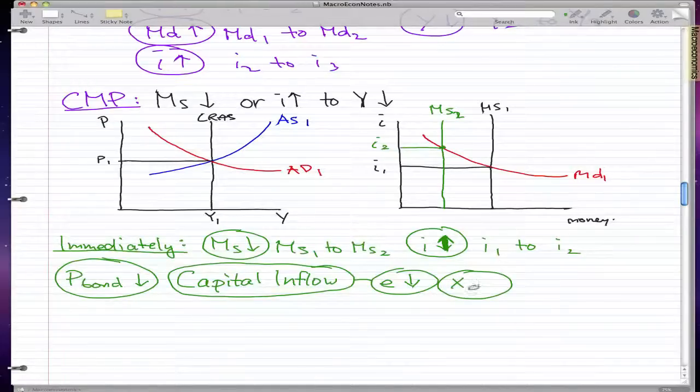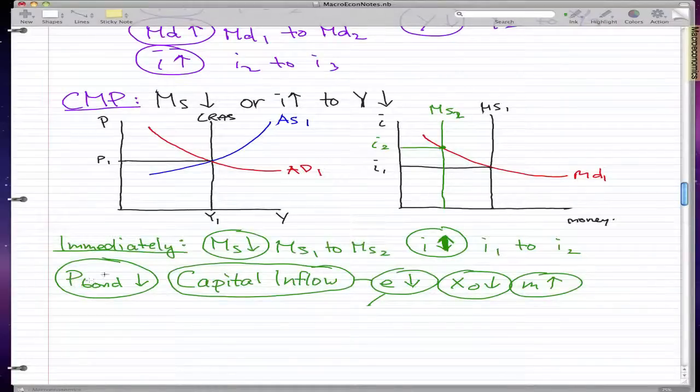And something else happens, the imports will go down, or the exports will go down, and the imports, which is M, goes up. And why did this happen? It happens for the opposite reasons of what I discussed in the EMP. So in the CMP, when the price of the bonds go down, something happens to the currency.